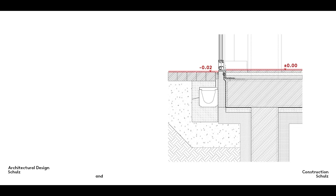To start with, we designed a very low threshold. In certain specific cases, accessibility regulations allow a difference in height of no more than 2 cm. Here, we set the paving in front of the door slightly deeper into the ground to provide space for any water that might build up over a short period and so delay the possible ingress of water.